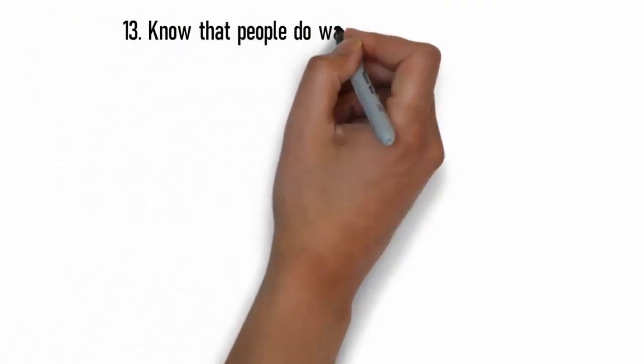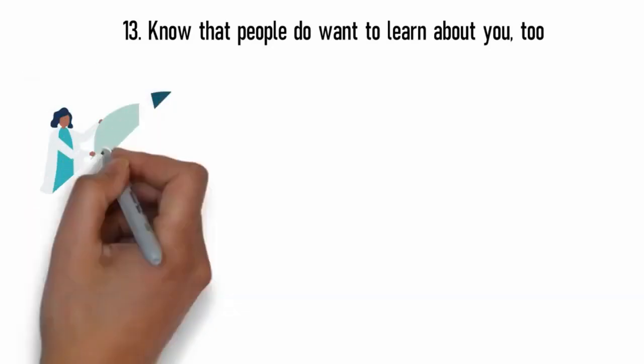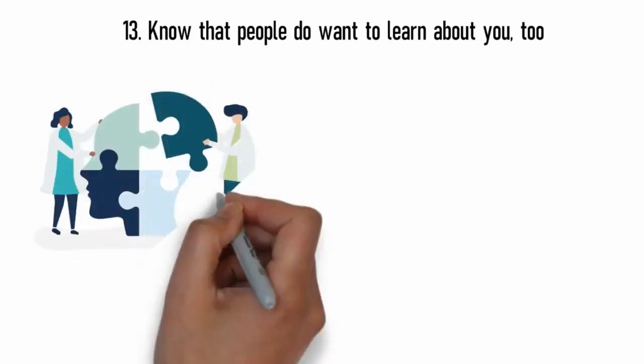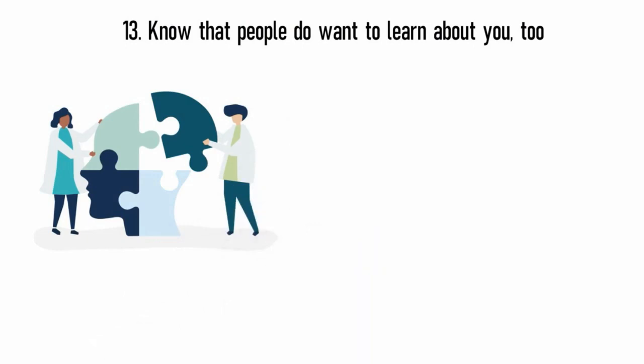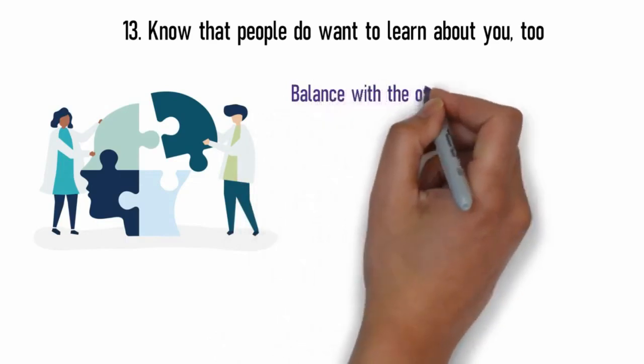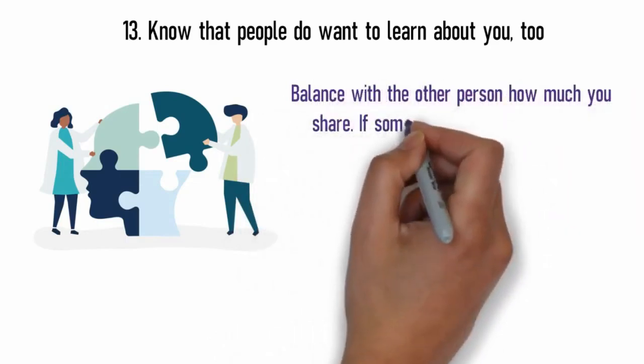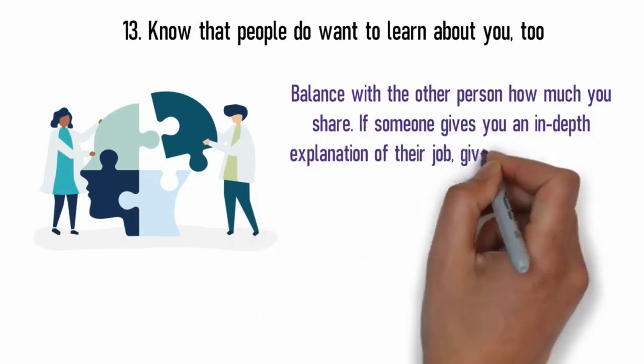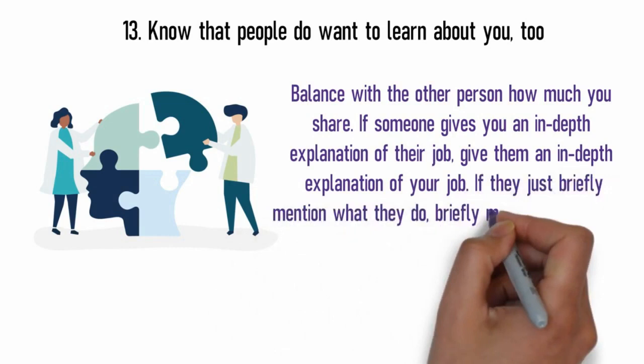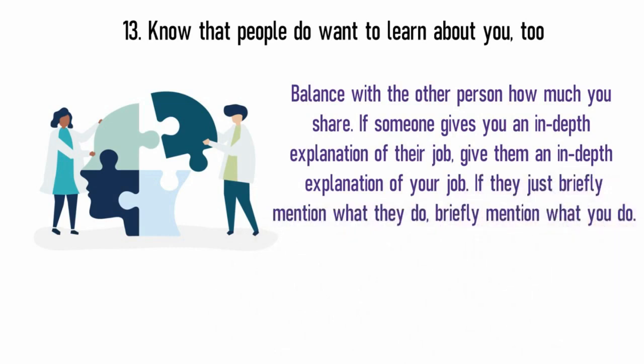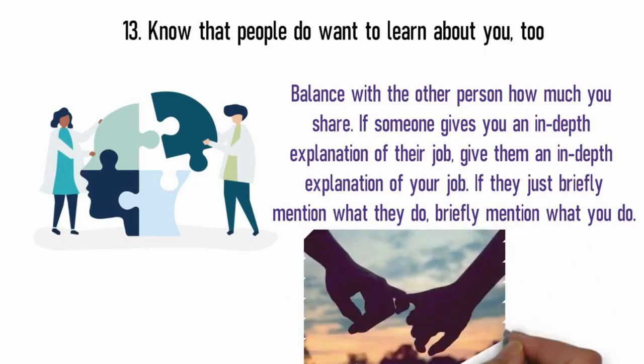13. Know that people do want to learn about you too. It's a myth that people only want to talk about themselves. They also want to get a picture of the person they're talking to, you. Don't be afraid to share things about yourself as long as you're also showing interest in the other person. Balance with the other person how much you share. If someone gives you an in-depth explanation of their job, give them an in-depth explanation of your job. If they just briefly mention what they do, briefly mention what you do. This helps us bond because we are revealing things to each other at the same pace. You're keeping it interesting for your partner because you're opening up too.